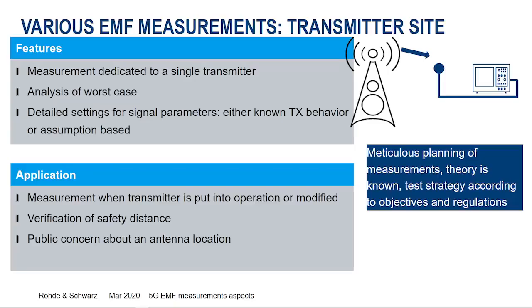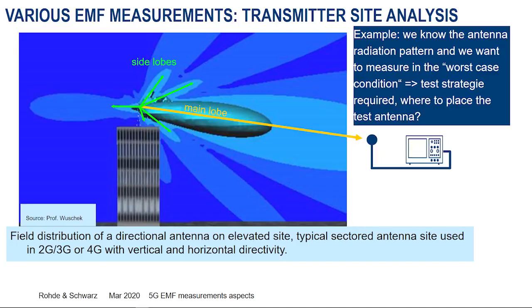A more enhanced level is the transmitter site verification. That means we have to prepare and build a strategy. We know something about our transmitter — the technology, the antennas, where it is located, what the exposure time is, and what direction the antenna points. Then we build a strategy: where to measure, how long to measure, and what test equipment to use.